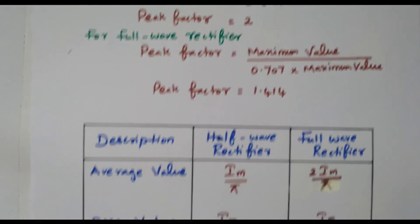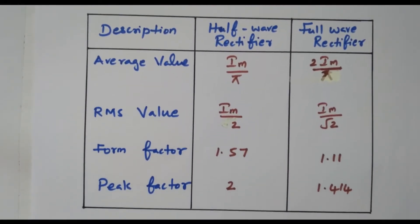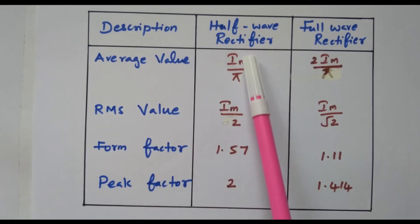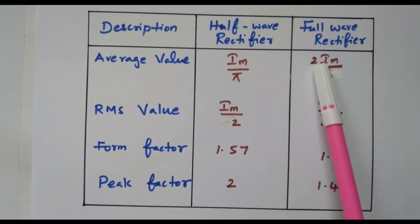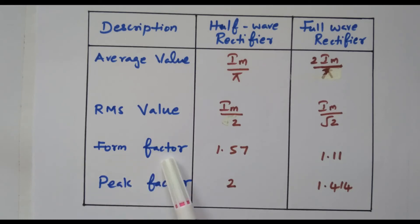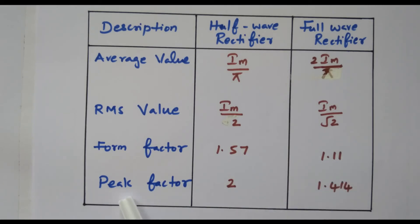Now we will do a comparison. In the comparison table: average value — half wave rectifier: Im/π; full wave rectifier: 2Im/π. RMS value — half wave: Im/2; full wave: Im/√2. Form factor — half wave: 1.57; full wave: 1.11. Peak factor — half wave: 2; full wave: 1.414. In this video we derived the RMS value and average value of half wave and full wave rectifiers, and calculated the form factor and peak factor. Thank you.